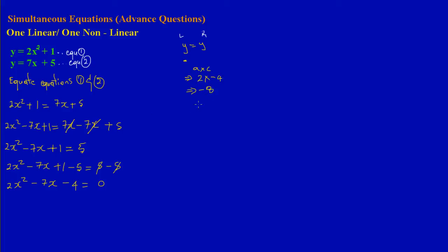I must find factors of negative 8 that when added give negative 7 and when multiplied give negative 8. By intuition, 8 times 1 gives 8. Since b is negative 7, the larger factor should carry the negative sign. So negative 8 times positive 1 gives negative 8, and negative 8 plus 1 gives negative 7, which matches my b value. My two factors are negative 8 and positive 1.